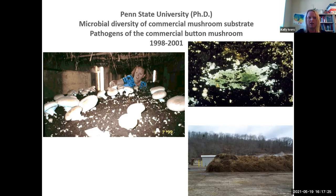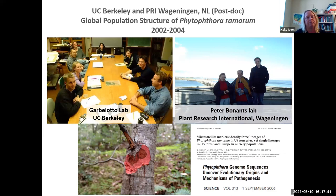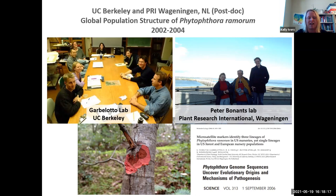After my PhD I wasn't ready for a faculty position and missed the West Coast, so I went back to California and did a postdoc for two and a half years. I had the opportunity to be a visiting scientist in Wageningen, the Netherlands, where I got to work on the first genome sequence of Phytophthora — specifically Phytophthora ramorum, which causes sudden oak death, something you may have heard of if you've been in the Bay Area. I actually helped publish a Science article because I extracted the DNA, chose the isolate, and got to work on the genome sequence.